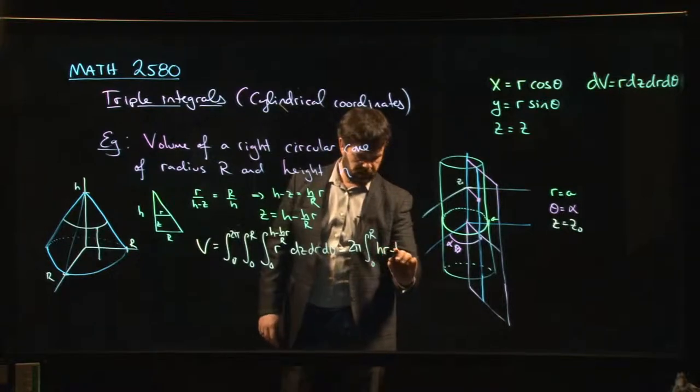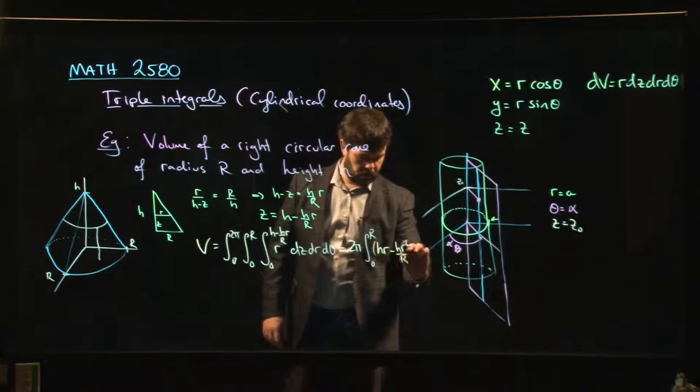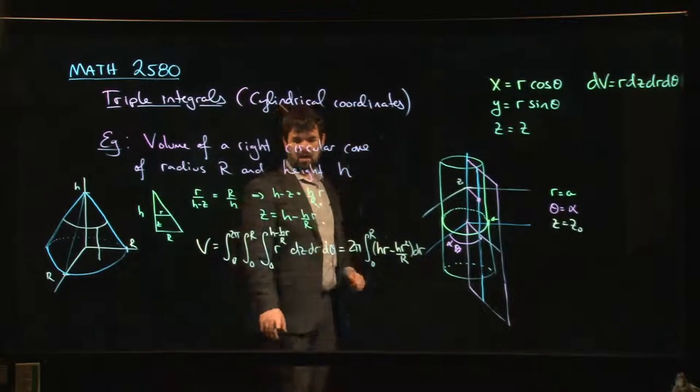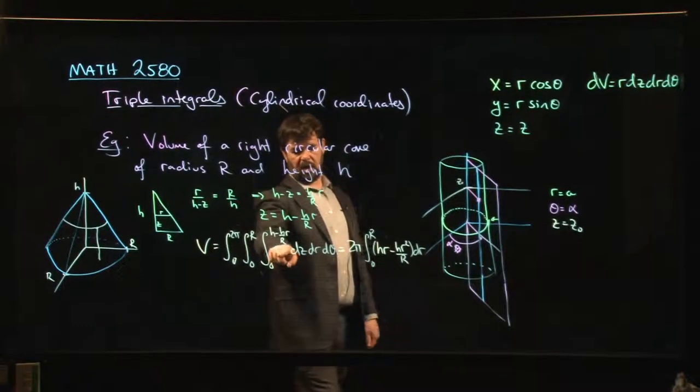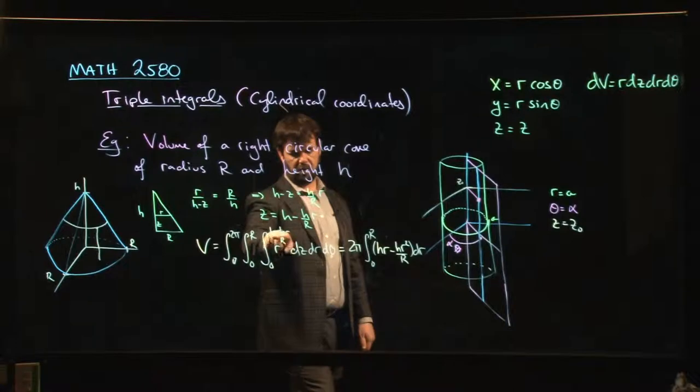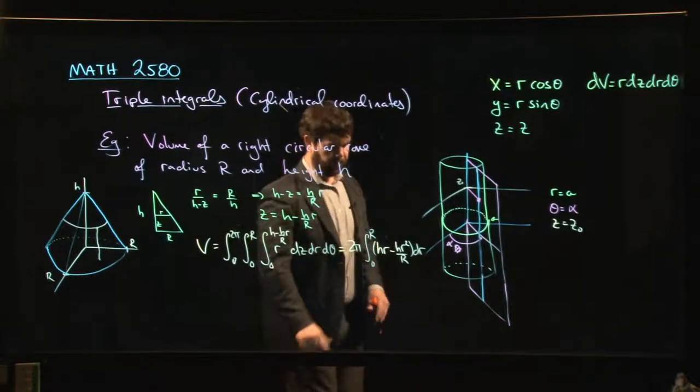Let's do the Z first. I get HR minus HR squared over big R dR. What I did there is I've got that R that's already there. I'm doing the Z integral, upper minus lower, just gives me H minus HR over big R. That whole thing is multiplied by this R here.